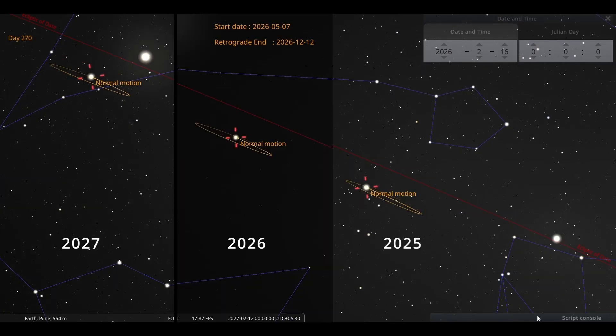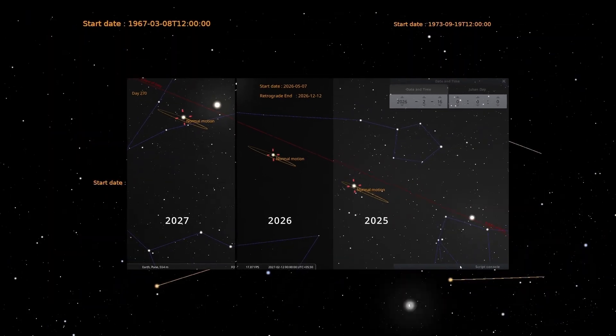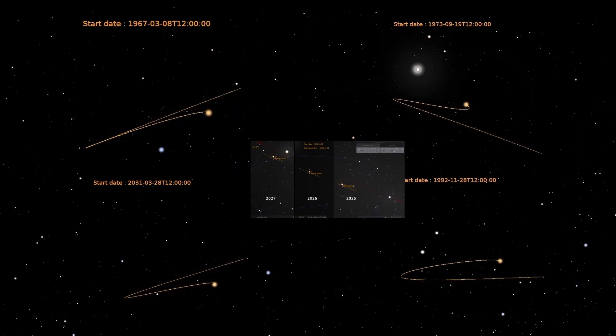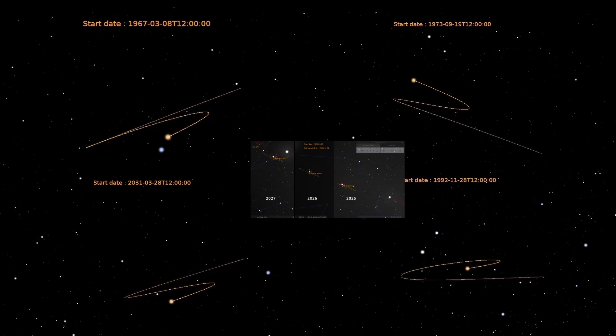This is in contrast to the different retrograde patterns displayed by Mars. For superior planets like Mars, Jupiter and Saturn, the period of retrograde motion often occurs around the time of opposition.